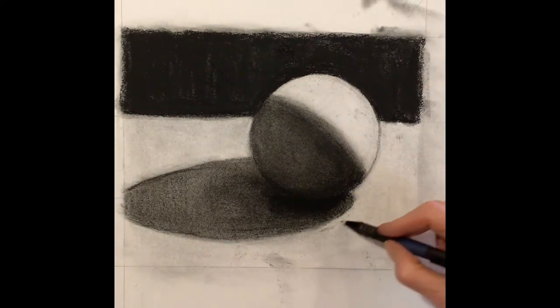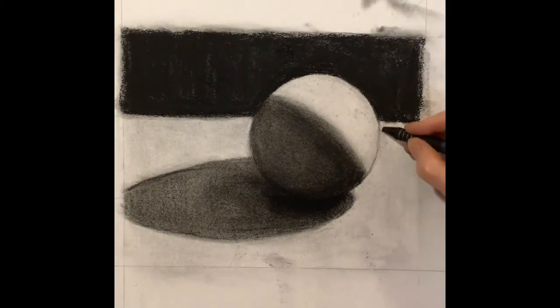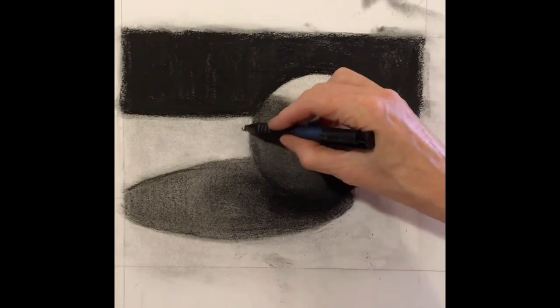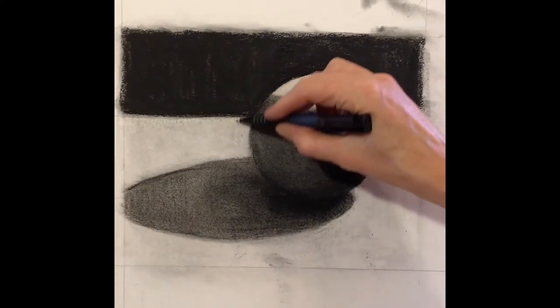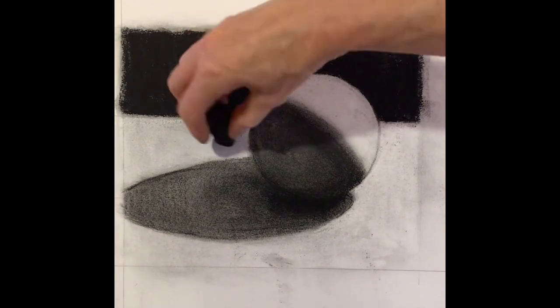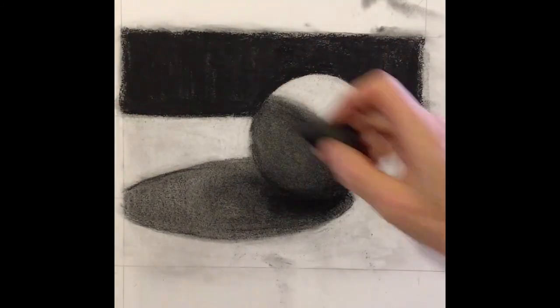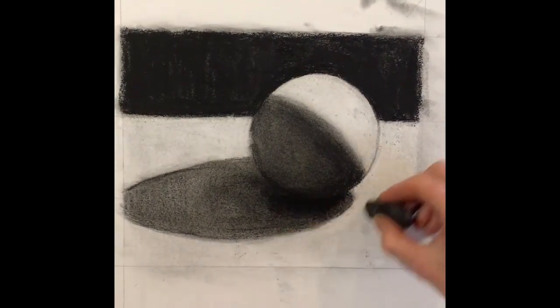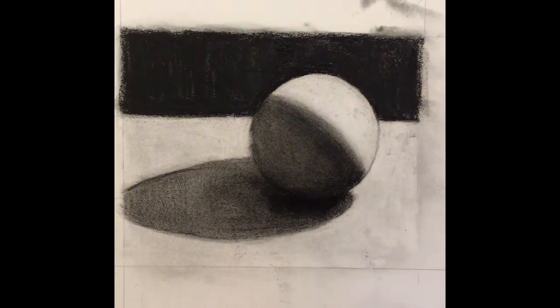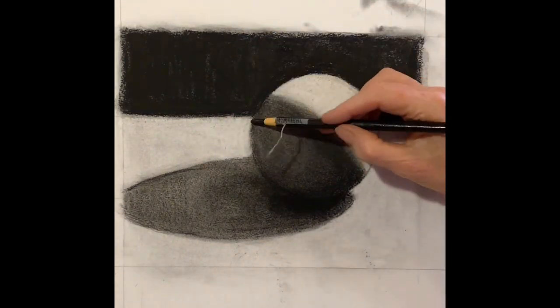Using my stick eraser to erase out some of the areas that I want to make sure are lighter. I like to use the stick eraser followed by the kneaded eraser to get out some of the eraser crumbs.